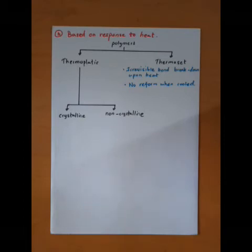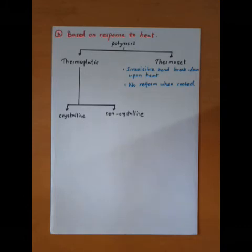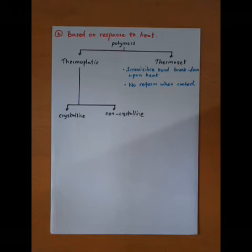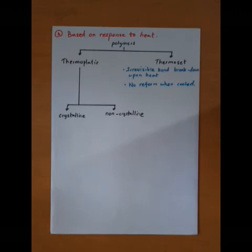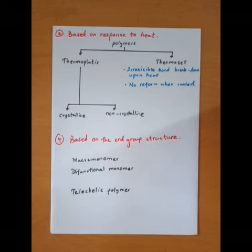Thermosets have irreversible breakdown upon heat and no reformation when cooled. They degrade rather than melt and consist of heavily cross-linked, dense 3D molecular networks. Examples include phenol formaldehyde and urea formaldehyde. Rubbers also degrade rather than melt upon heating, display elastomeric properties — they can be stretched to high extensions and return to their original form when stress is released. Rubbers consist of lightly cross-linked macromolecular networks, for example vulcanized rubber with sulfur-sulfur cross-links between hydrocarbon chains.